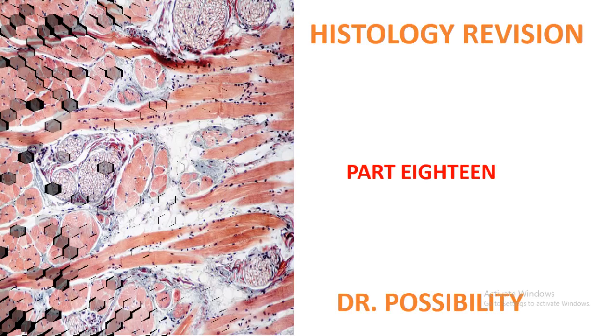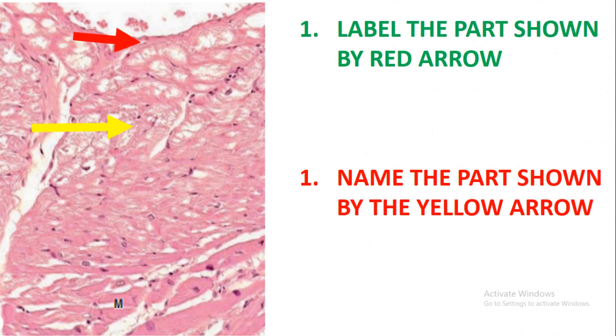The first question: I've been given this slide and the question is label the part shown by the red arrow. The part shown by the red arrow is the endothelium. Name the part shown by the yellow arrow. The yellow arrow is pointing at the Pacinian fiber.